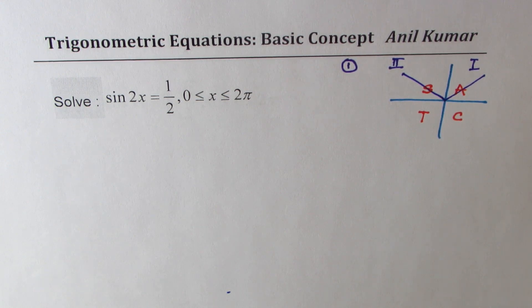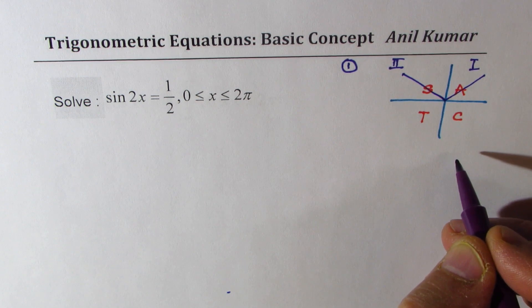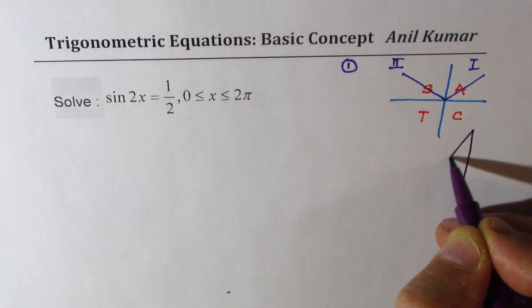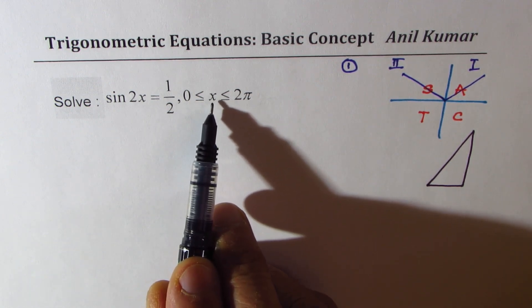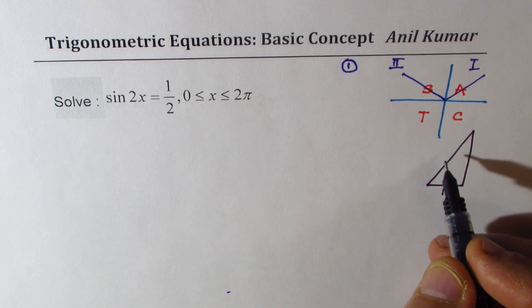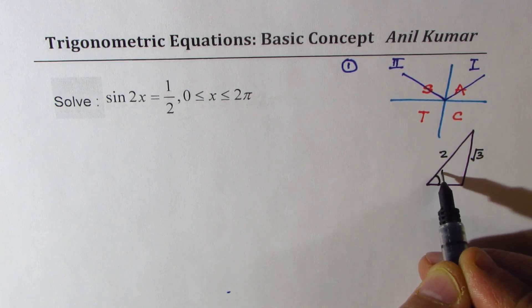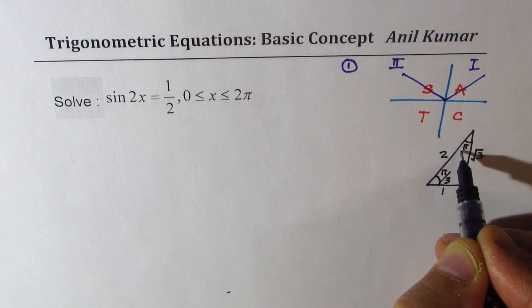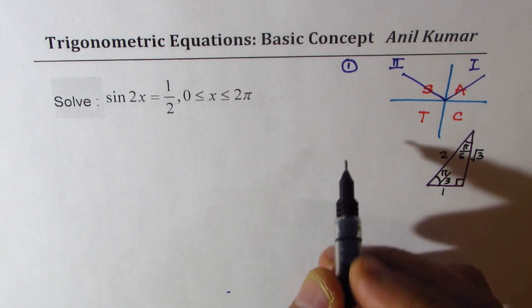Second, when we are looking for values like 1 over 2, that reminds us of a special triangle. Whenever you are solving trigonometric equations, keep in mind these special triangles. We'll work with radians since domain for x is 0 to 2 pi. This triangle is 30, 60, 90 or in radians, pi by 3, pi by 6, and 90. So this is the second thing which you should know.